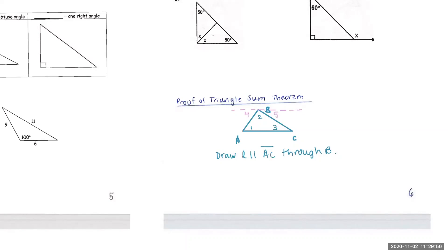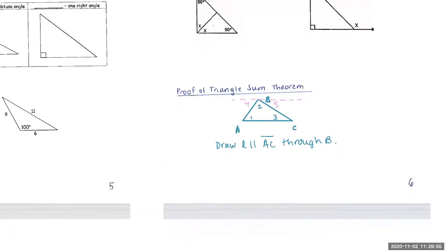That line is going to allow me to form two angles that I need for this proof — angle four and angle five. Those are outside of the triangle. You have four, two, and five there. I'll switch back and draw a bubble around this — this is the first step, I drew that extra line. After that, it says draw line L parallel to AC, so now you know that this line is parallel to this line.